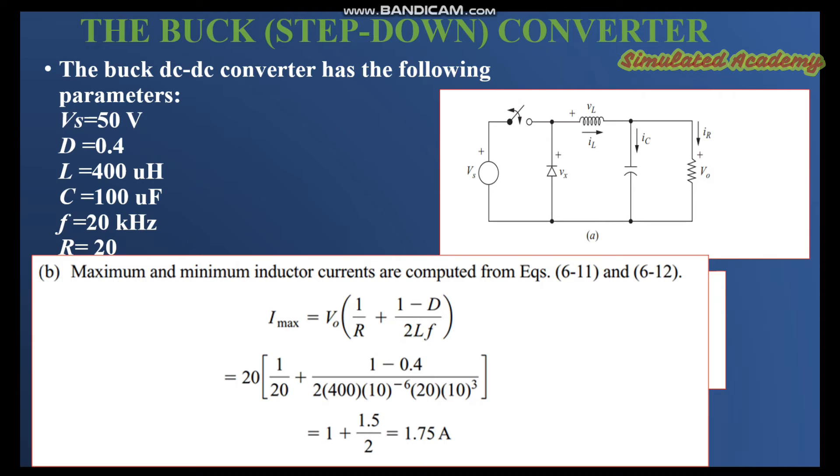V0 is calculated through part A as 20. Write 20 in place of V0 and place R value of 20 ohms, duty cycle value of 0.4, and inductor and capacitor value of 400 microhenry and 100 microfarad respectively. So Imax would come out to be 1.75 amperes. It is the maximum current passing through this inductor L.